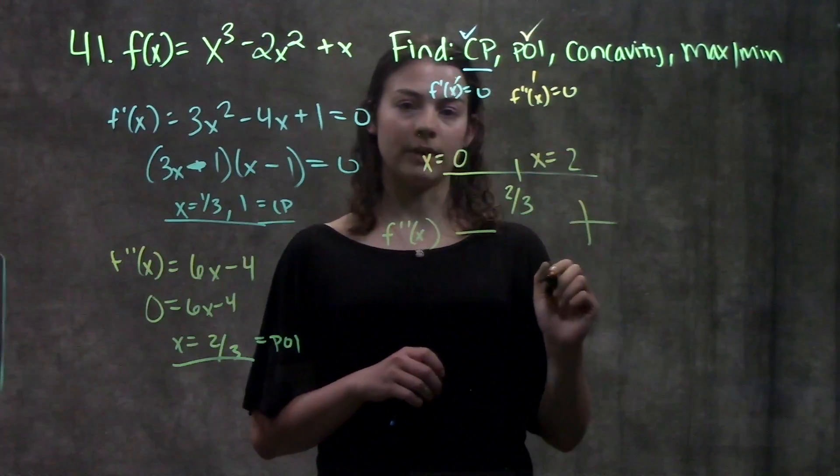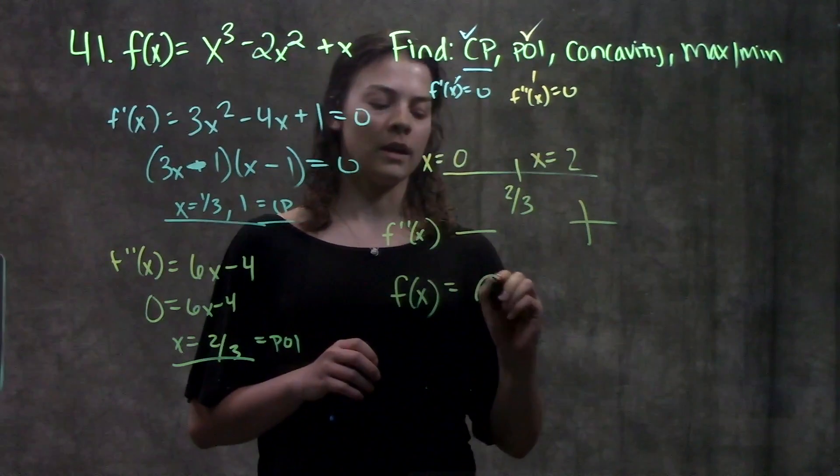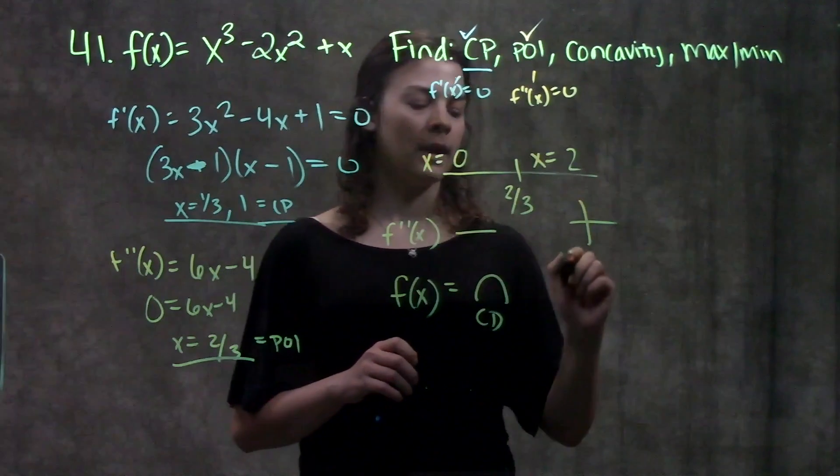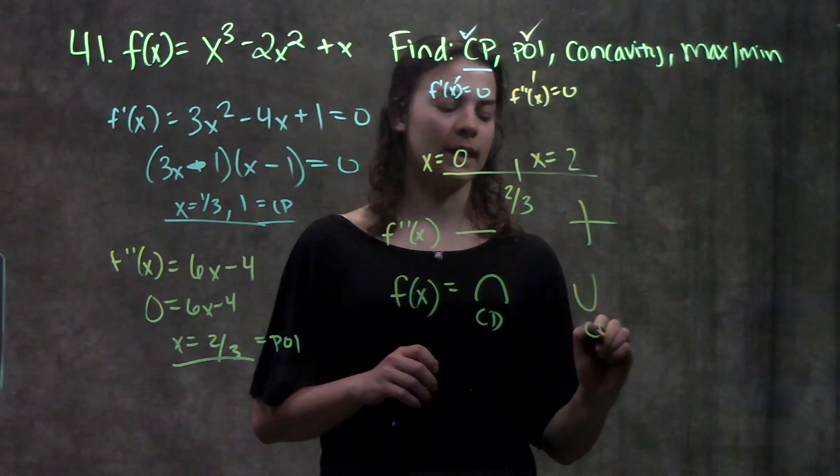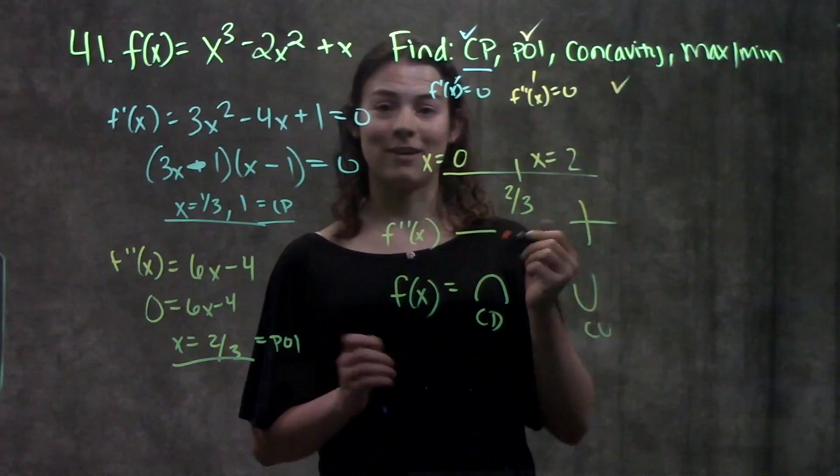So that tells me that f of x, my original function, is concave down on this interval because f double prime is negative. And it's concave up on this second interval from 2 thirds to infinity. Alright. I have my intervals.